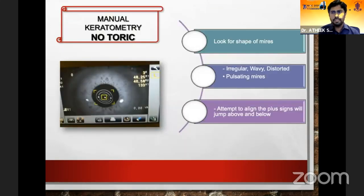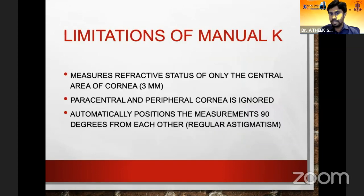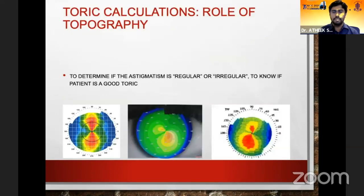Red flag signs in manual keratometry include the shape of the mires — if they are irregular, wavy, distorted, or you are unable to align them, these indicate that keratometry is unreliable. A key limitation of manual K is that only central K can be obtained and the peripheral cornea is ignored, which is where topography comes into play.